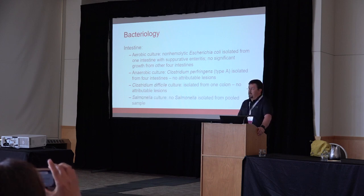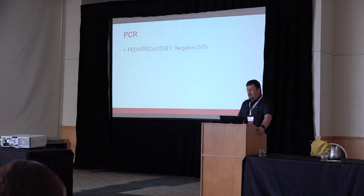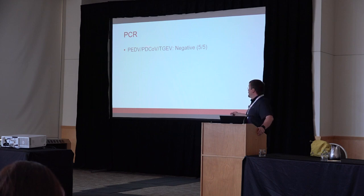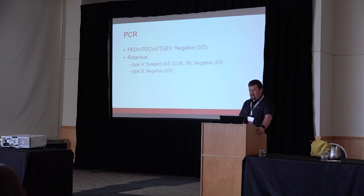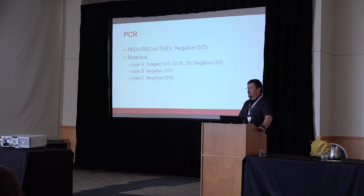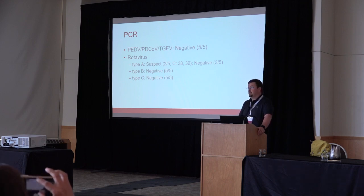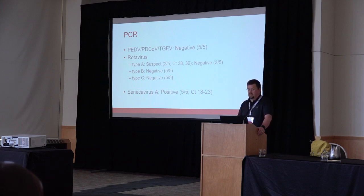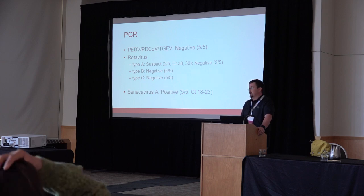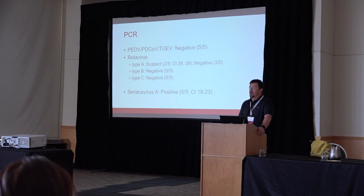We did Salmonella culture — at two days old, not really high on the list. Enteric coronaviruses were negative. We had some trace rotavirus A with CTs of 38 and 39. Rotavirus type B was negative. Rotavirus type C was also negative. So what else might be there? In this case, we had a PCR for Seneca virus A. All five intestinal samples were PCR positive with low CTs of 18 and 23, which is pretty classic for what we see with Seneca virus A causing diarrhea in piglets.